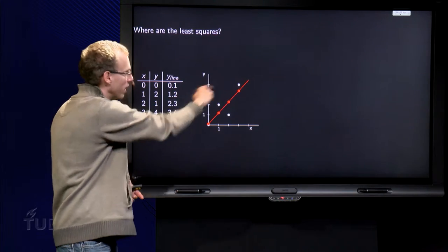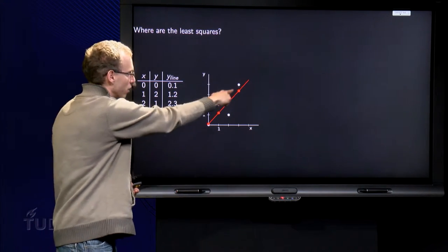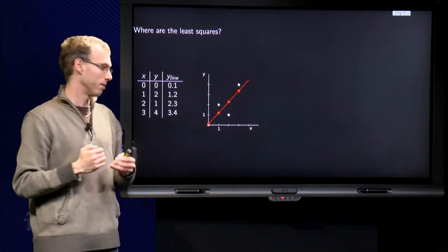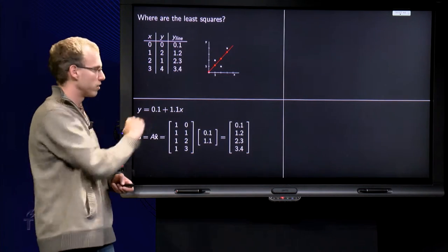So the white dots over here are the data points, the red dots over here are the points on the optimal line which we computed over there. So that was our line.